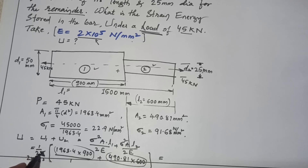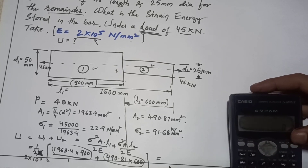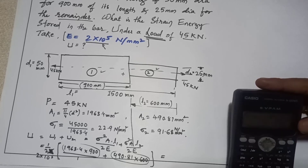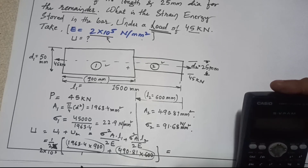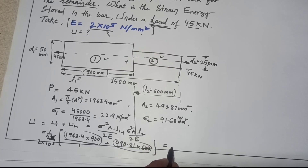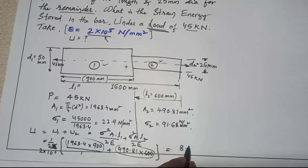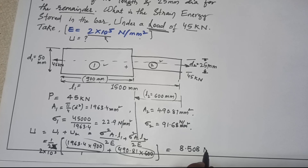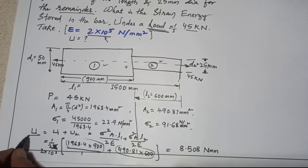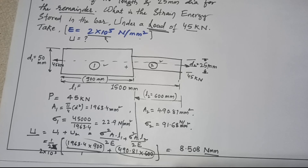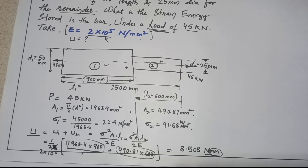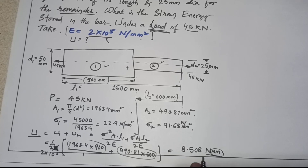Adding these in the calculator with 2E = 2 × 2×10⁵ outside, we get the final answer of 8.50 Newton-millimeter. This is the unit of strain energy. Since all dimensions are in millimeters, you can convert this into Newton-meters or Joules. Hope you understand this question — thank you.